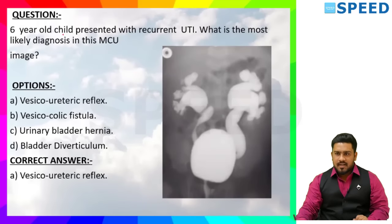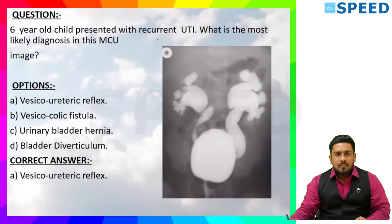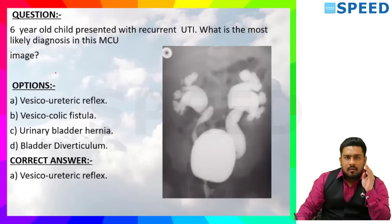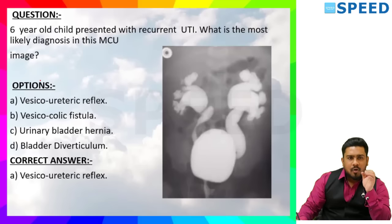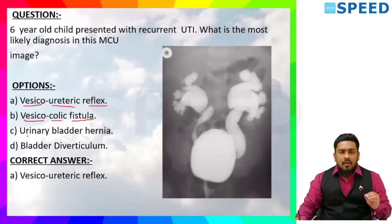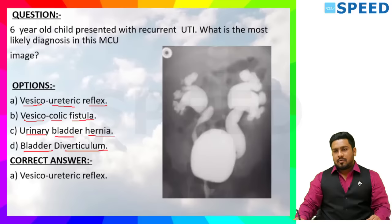Question: A six-year-old child presented with recurrent urinary tract infection (UTI). What is the most likely diagnosis in this MCU image? The options are: vesico-ureteric reflux, vesico-colic fistula, urinary bladder hernia, and urinary bladder diverticulum.